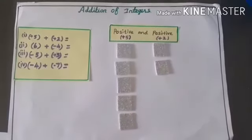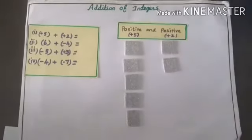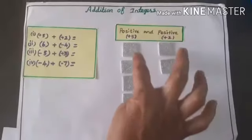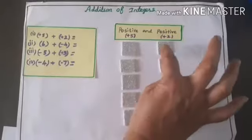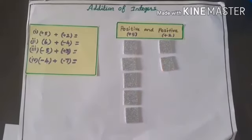Both are same in color. So, simply we can just add it together. 5 plus 2: 5, 6, 7. So, the answer is plus 7.